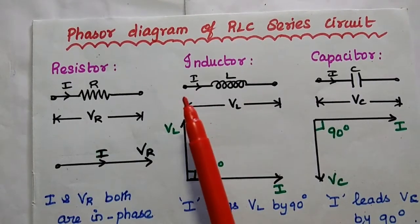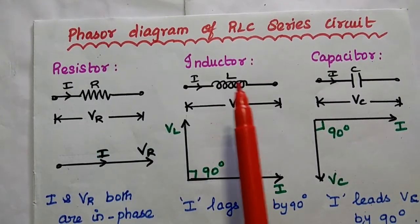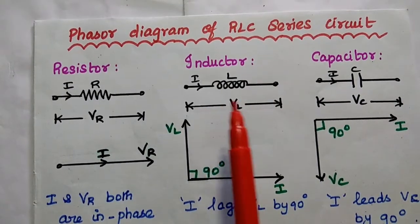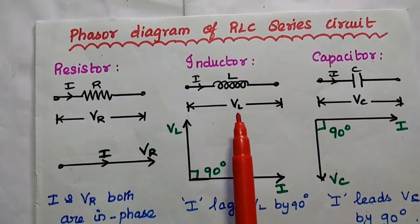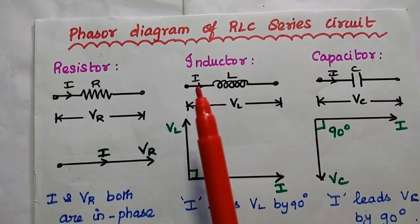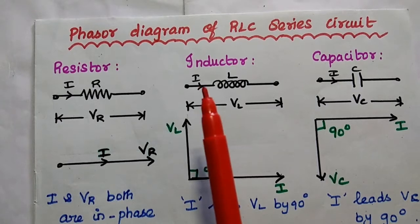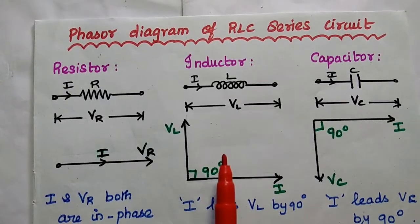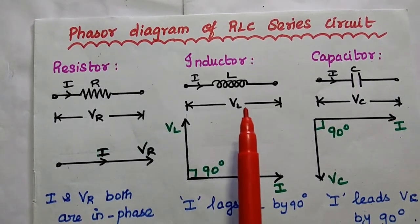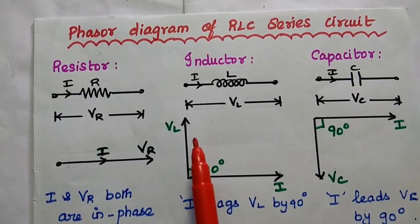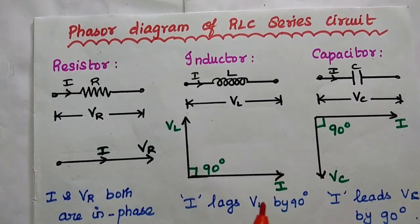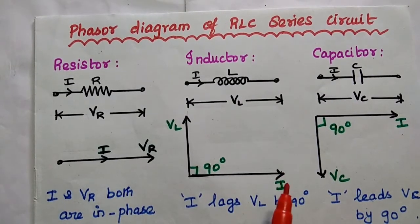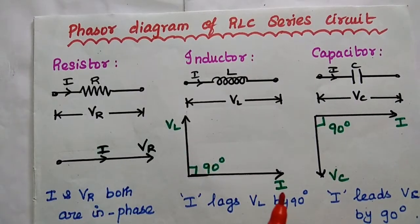For the inductor, if current flows through it, there is a voltage drop due to this current, but the relationship is not the same. We obtain VL by applying differentiation of I — that is, VL = L · dI/dt. This means the current is lagging behind VL by 90 degrees. So we represent the phasor diagram for the inductor with current lagging VL by 90 degrees.